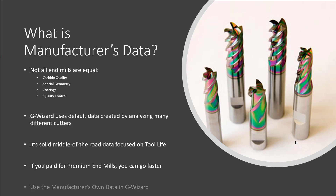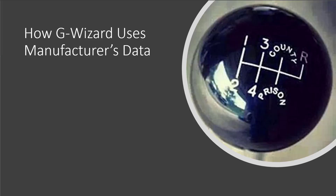So let's talk about how G Wizard uses manufacturer's data. G Wizard can use it in two ways. First, you can enter specific numbers for a specific cutter — great if you have a particular cutter you use a lot in one size. For example, it's an excellent way to work with indexable tooling by entering data for a particular insert type. Second, you can enter manufacturer's data for a whole family of tools, which is the way to go if you buy all your end mills from a particular manufacturer, covering all sizes with a minimum of data entry.